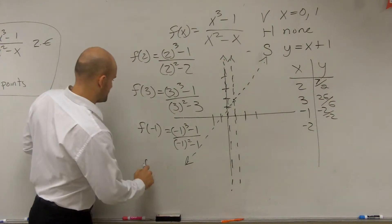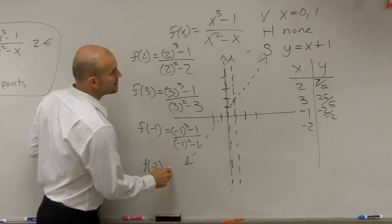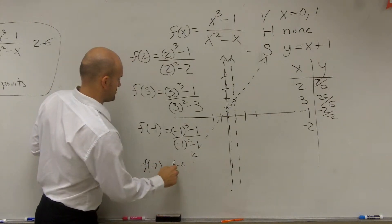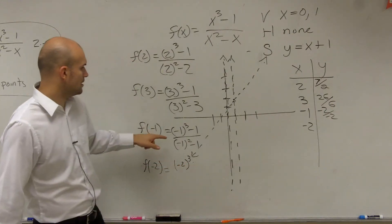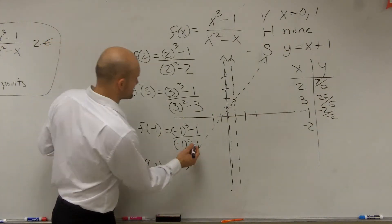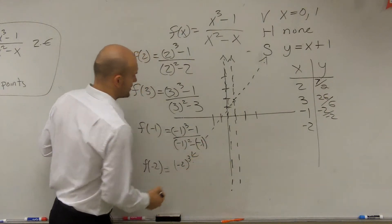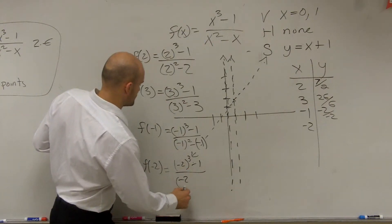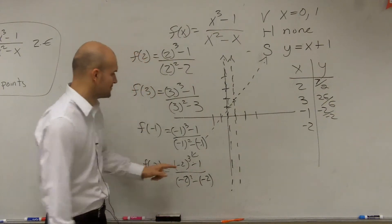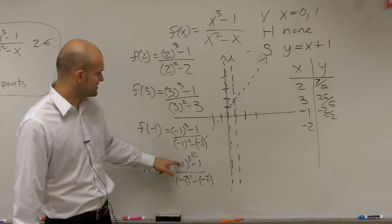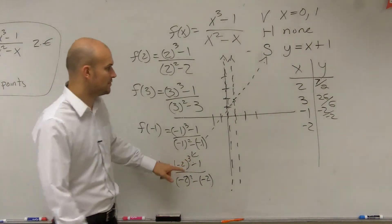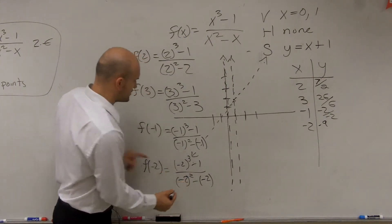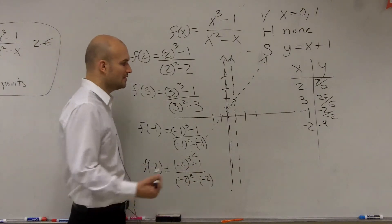And then we do f of negative 2. I forgot to put parentheses around there. Minus 1 divided by negative 2 squared minus a negative 2. Make sure, guys, when you're evaluating, put parentheses around your negative numbers. Because negative 2 cubed is going to be a negative 8 minus 1 is negative 9. And then you have negative 2 squared, which is 4, minus a negative 2, which is now going to be 6.